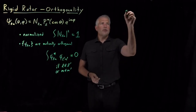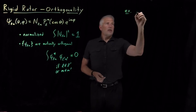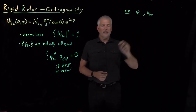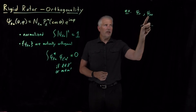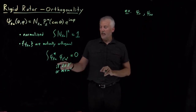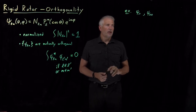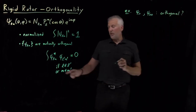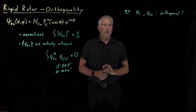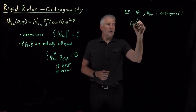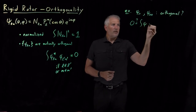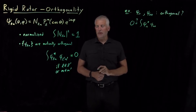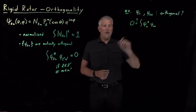We can do a quick example to make sure that's clear. Let's take two of the simpler wave functions: ψ₁,₁ and ψ₀,₀ — L equals 1, M equals 1, and L equals 0, M equals 0. Both the Ls and the Ms are different from each other, and we can verify that they're going to be orthogonal.